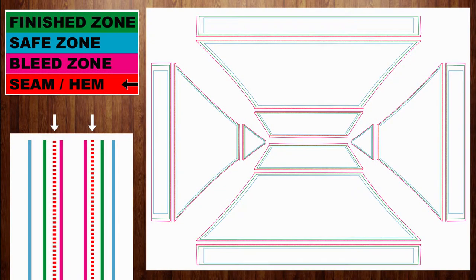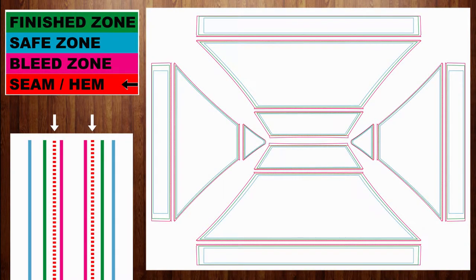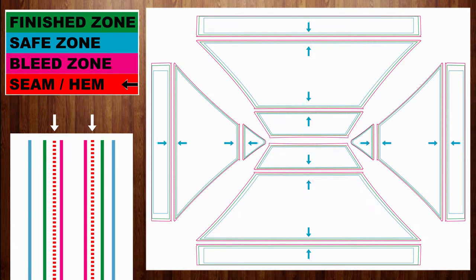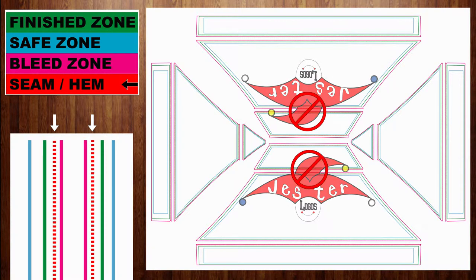The red dotted line indicates a hem or seam line. This means that the two adjacent edges on the template will be sewn together or hemmed during product manufacturing. Due to the difficulty in matching images and logos across seams, we ask that no item be placed bridging the area across the dotted line if it can be avoided.